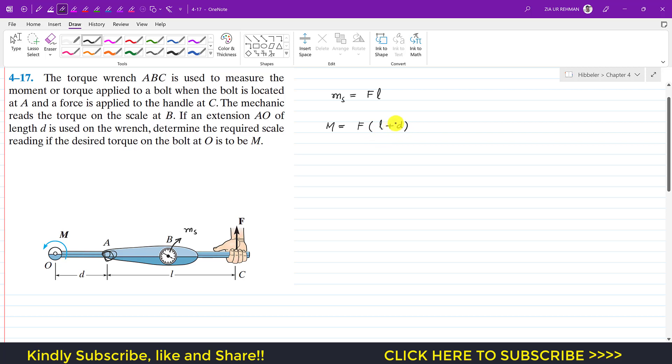Now we have to represent this scale reading in terms of capital M. So it is said, what will be the effect if an extension AO of length D is used on the wrench? Determine the required scale reading if the desired torque on the bolt at O is to be M.